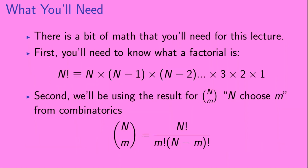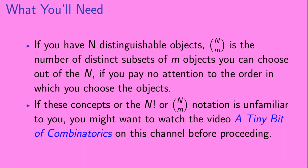There is a bit of math you'll need for this lecture. First, you need to know what a factorial is. A factorial is written as n with an exclamation point after it, and it equals n times n minus 1 times n minus 2, all the way down to 3 times 2 times 1. Second, we'll use the result for n choose m, written as n and m in parentheses, equal to n factorial divided by m factorial divided by n minus m factorial. If you have n distinguishable objects, n choose m is the number of distinct subsets of m objects you can choose out of n, paying no attention to order. If these concepts are unfamiliar, you might want to watch 'A tiny bit of combinatorics' on this channel before proceeding.